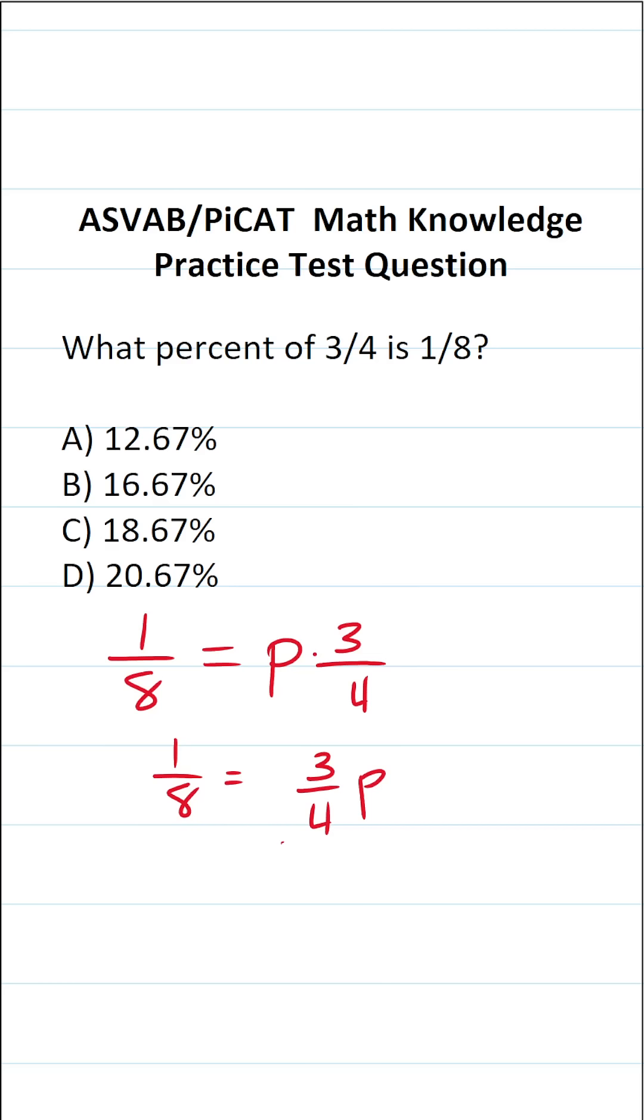To solve for P, all we have to do is clear this three-fourths in front of it. That is to say, we're going to multiply both sides of this equation by the reciprocal of three-fourths, which is going to be four over three.